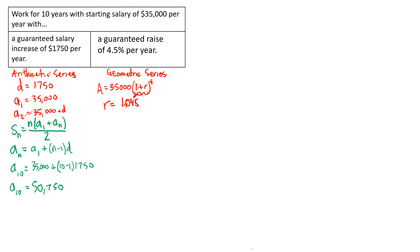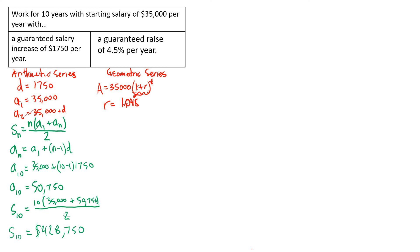Now that I have a_1 and a_10, I can find the sum. S_10 equals 10 times (35,000 plus 50,750) divided by 2. Working that out: overall, after working this job for 10 years with the $1,750/year raise, you would have made a total of four hundred and twenty-eight thousand, seven hundred and fifty dollars.